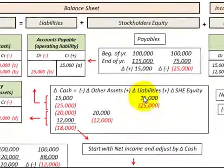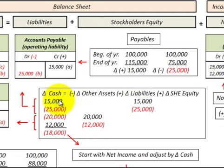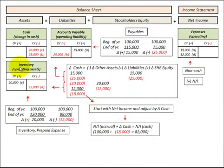Looking at our accounting equation, the change in liabilities represented by accounts payable is a direct translation to the change in cash. So a plus $15,000 translates to a plus $15,000 in the change in cash. A minus $25,000 in the change in liabilities translates to a minus $25,000. Now looking at the asset side of the equation, that would be our inventory and prepaid expenses.